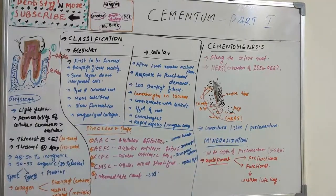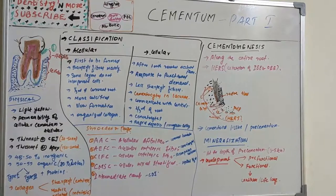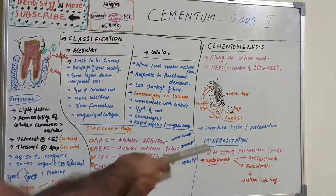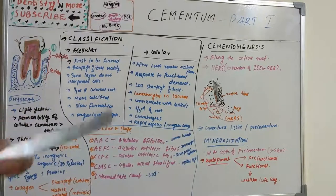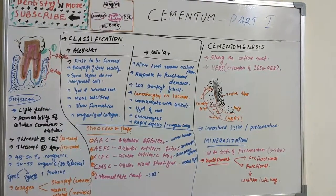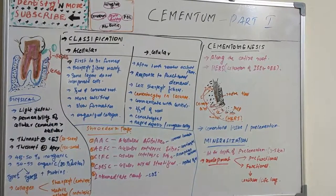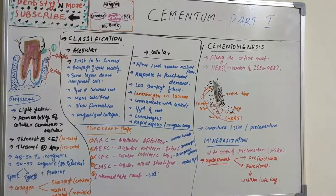Cementoblasts synthesize an organic matrix that is initially uncalcified, called cementoid tissue or pre-cementum. This is the first form of cementum laid down. Although it has the name pre-cementum, it is uncalcified. It is also known as cementoid. This may be asked as a short note — cementoid tissue or pre-cementum.